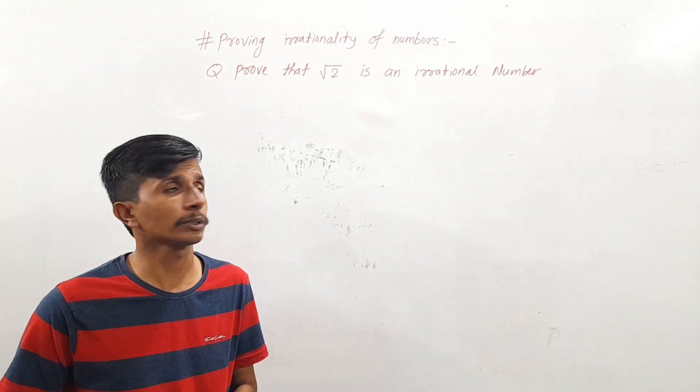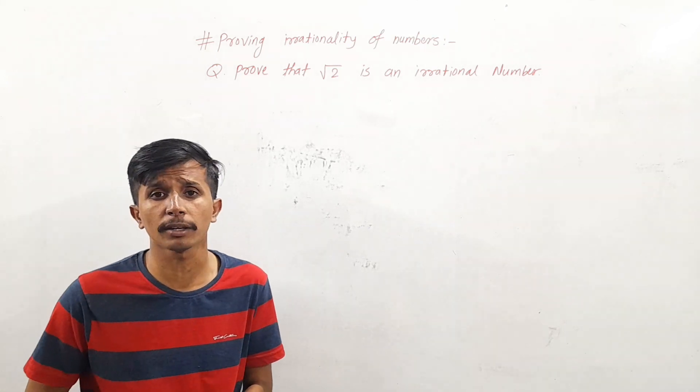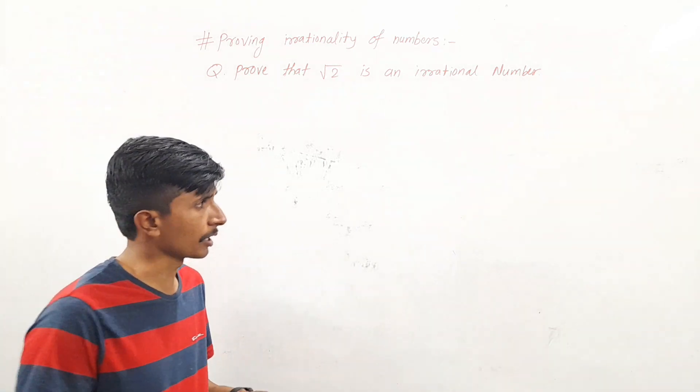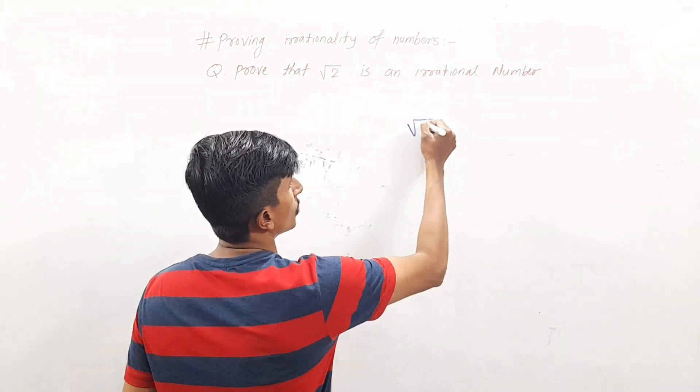Those numbers which cannot be written in the form of P by Q are known as irrational numbers. So we know that root 3,